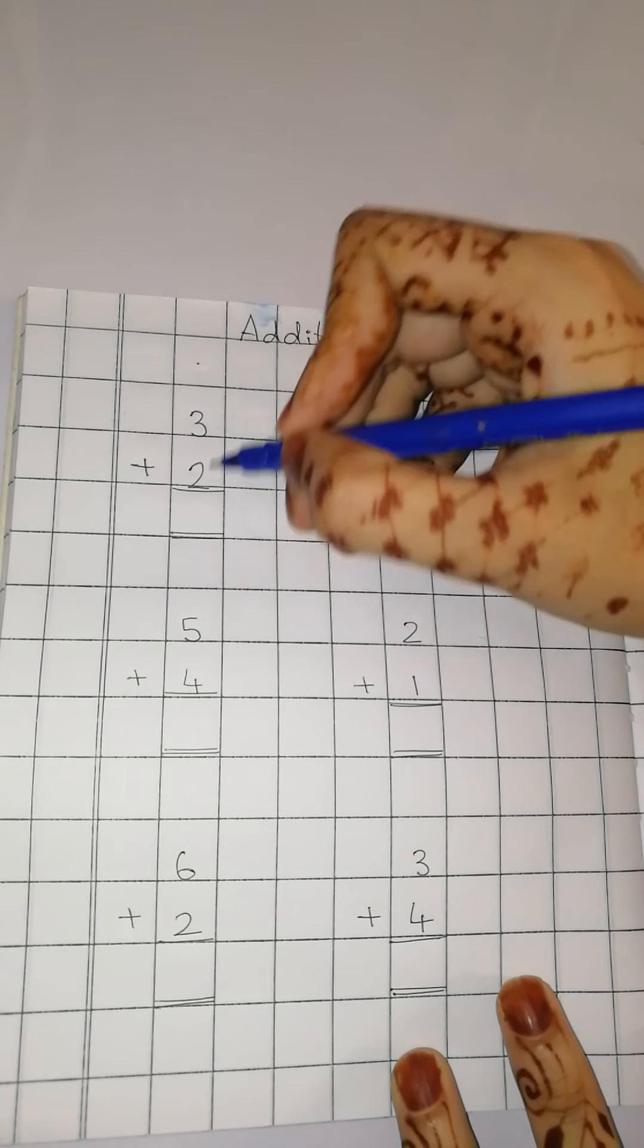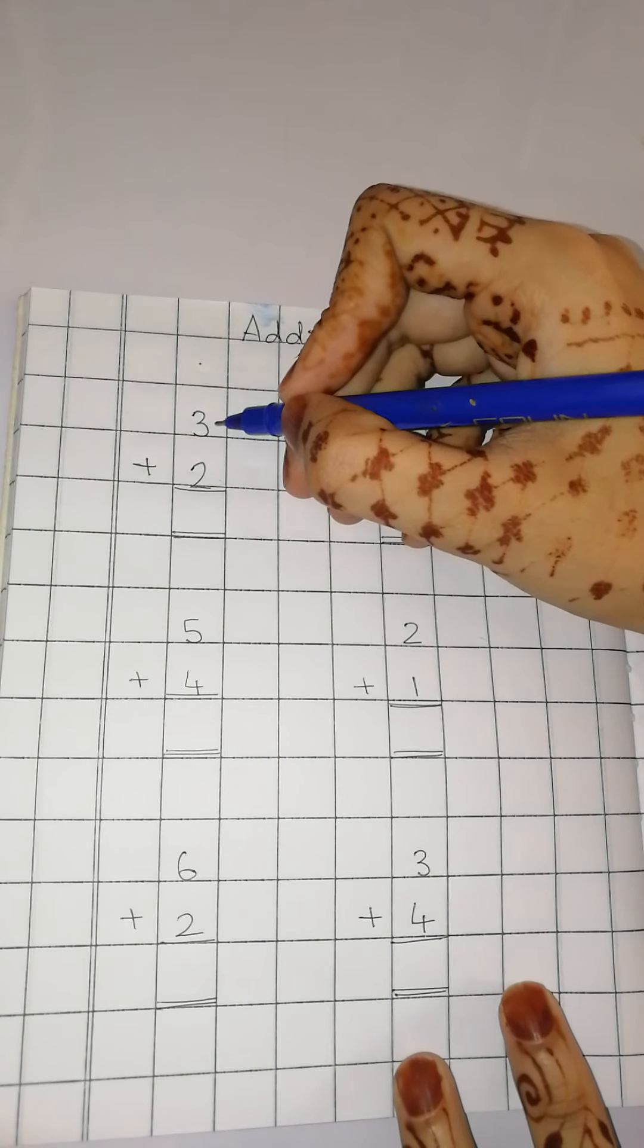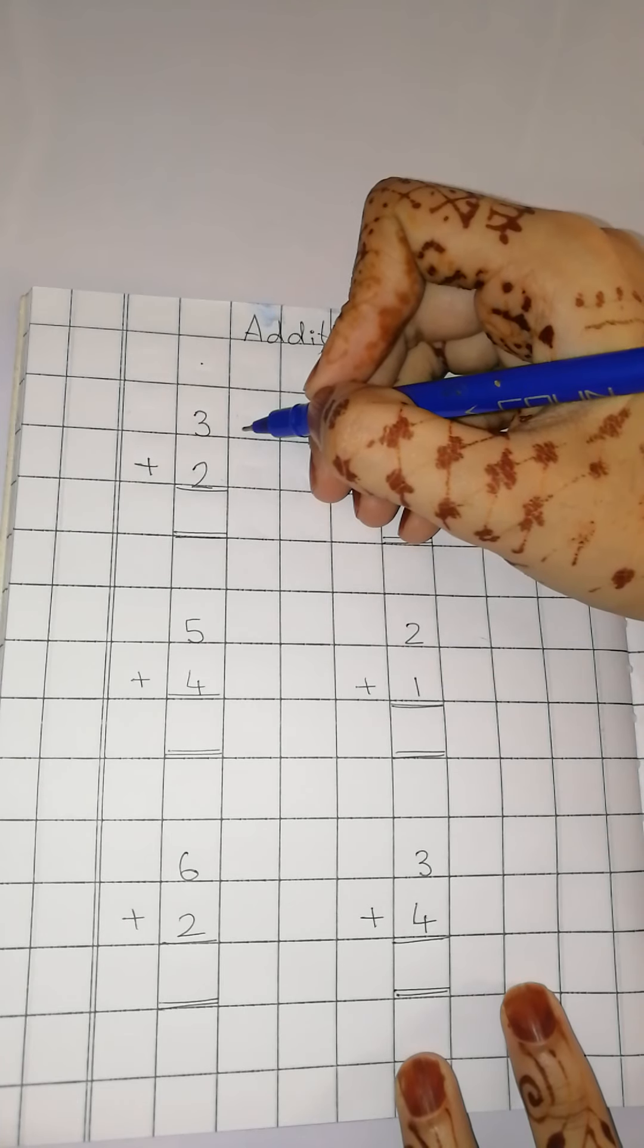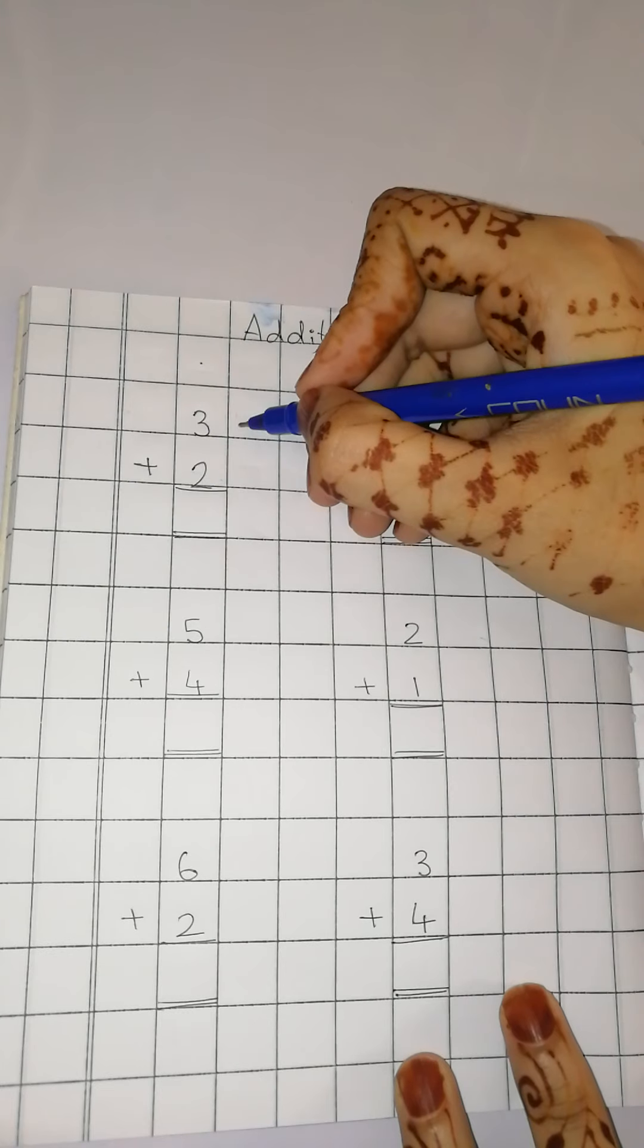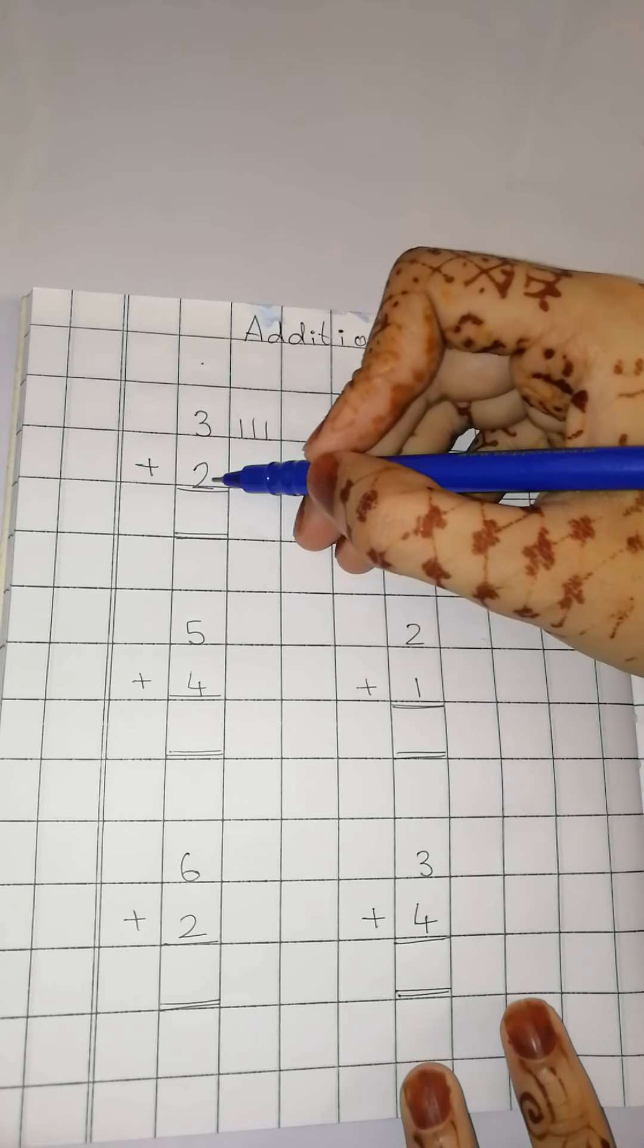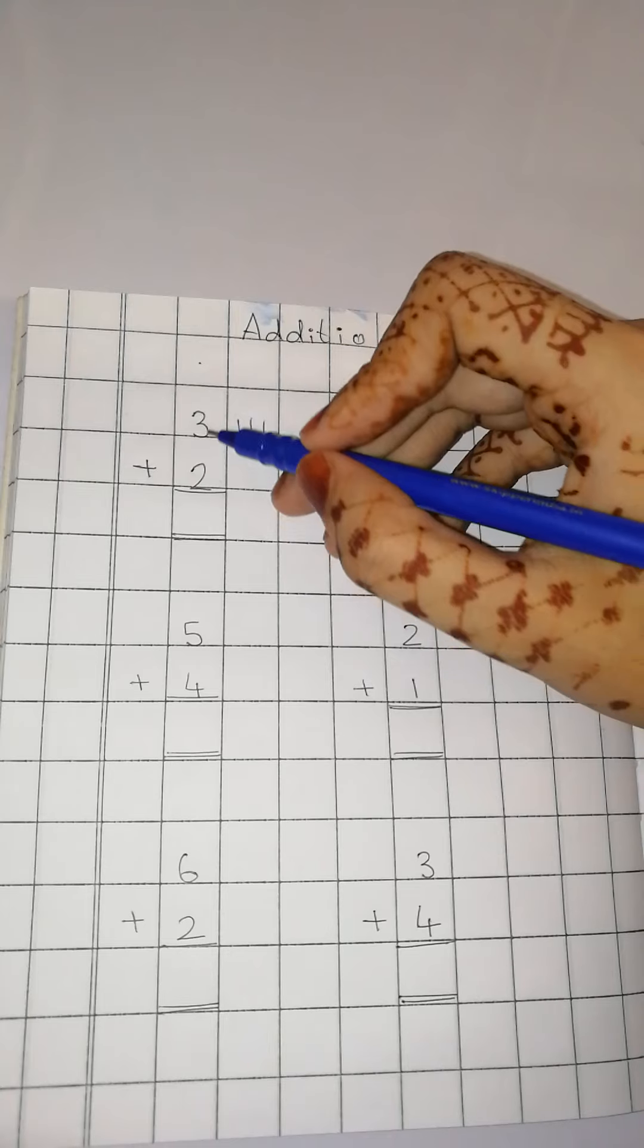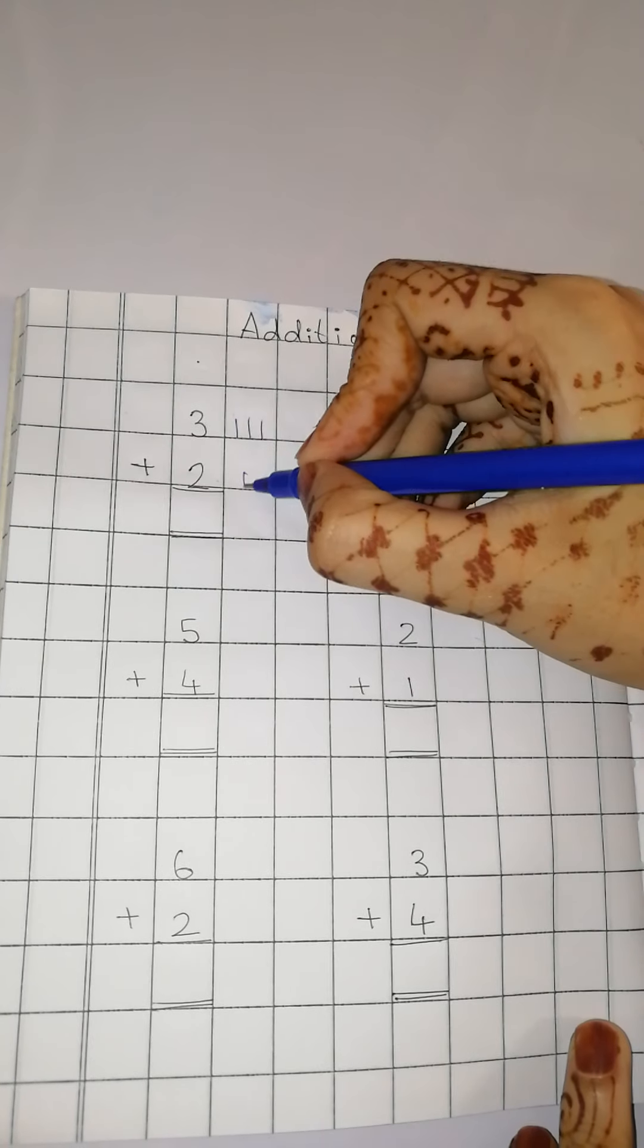So how to solve this sum? Let us see. You have to take the first number. So you are going to draw 1, 2, 3 lines. And now, which is the next number? Usmeh 3 mein aur kitne add karne hai? 2.